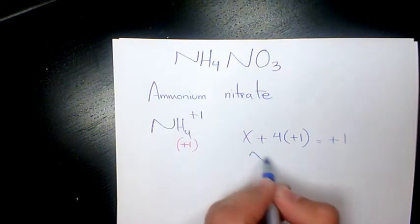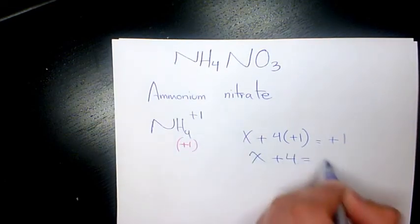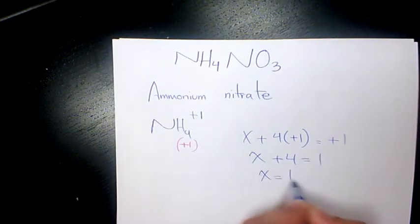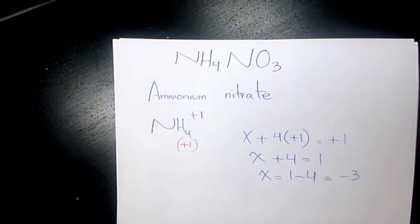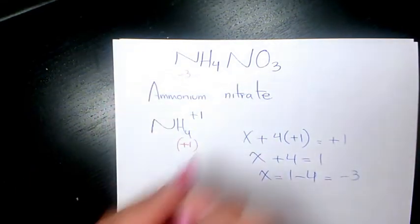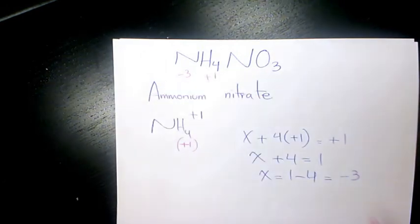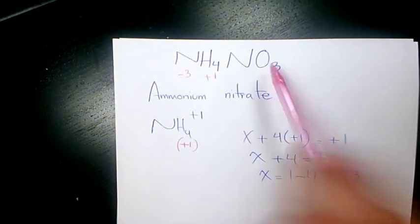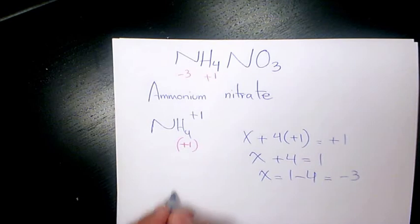So X plus four equals one. X will be one minus four, which equals negative three. So nitrogen is negative three and hydrogen is plus one. And here we have nitrate, which is negative one.